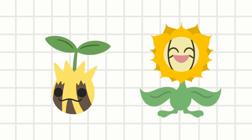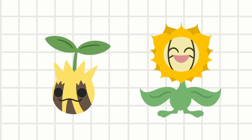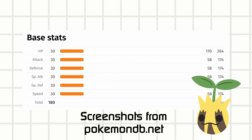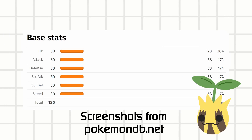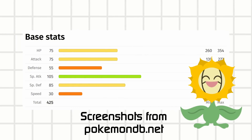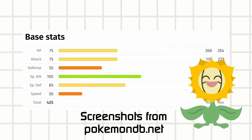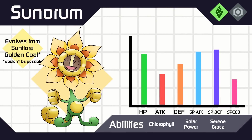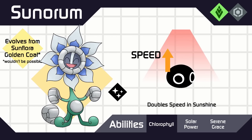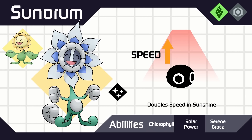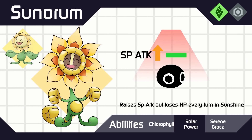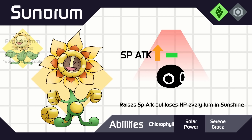All the sunflower talk kind of clued you in to which mon I'm going to talk about. Sunkern used to be a joke mon, which had the smallest base stat total in the whole game until some later generations came out, and Sunflora is generally regarded as just weak. So I decided to give it a straight-up evolution. Give Sunflora a golden coat — which would have been a new item — and it makes Sun Aurum. Aurum means gold, and this evolution has a bunch of spirals on their limbs, and their face shows off the Greek letter phi to some extent.